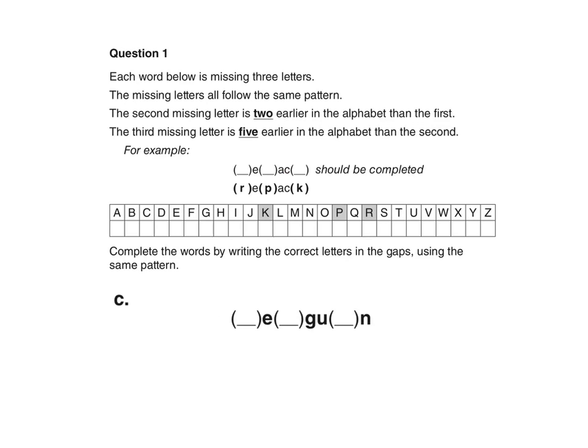Question 1. Each word below is missing three letters. The missing letters all follow the same pattern. The second missing letter is two earlier in the alphabet than the first. The third missing letter is five earlier in the alphabet than the second.